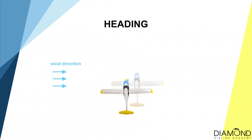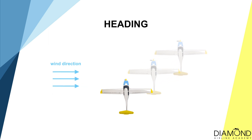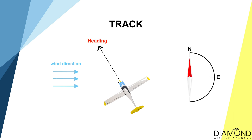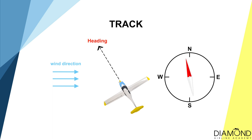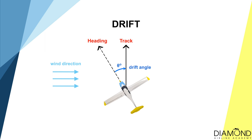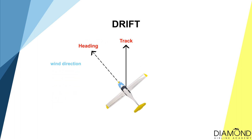Firstly, heading. Heading is what the nose of the aircraft is pointing towards in relation to the magnetic poles. And track is the direction of where the aircraft is actually travelling. On a windless day, the heading and the track will be the same. However, when there is a crosswind present, the aircraft may not necessarily be travelling in the same direction as the heading. The difference between track and heading is what we call the drift angle. The stronger the crosswind, the greater the drift angle.